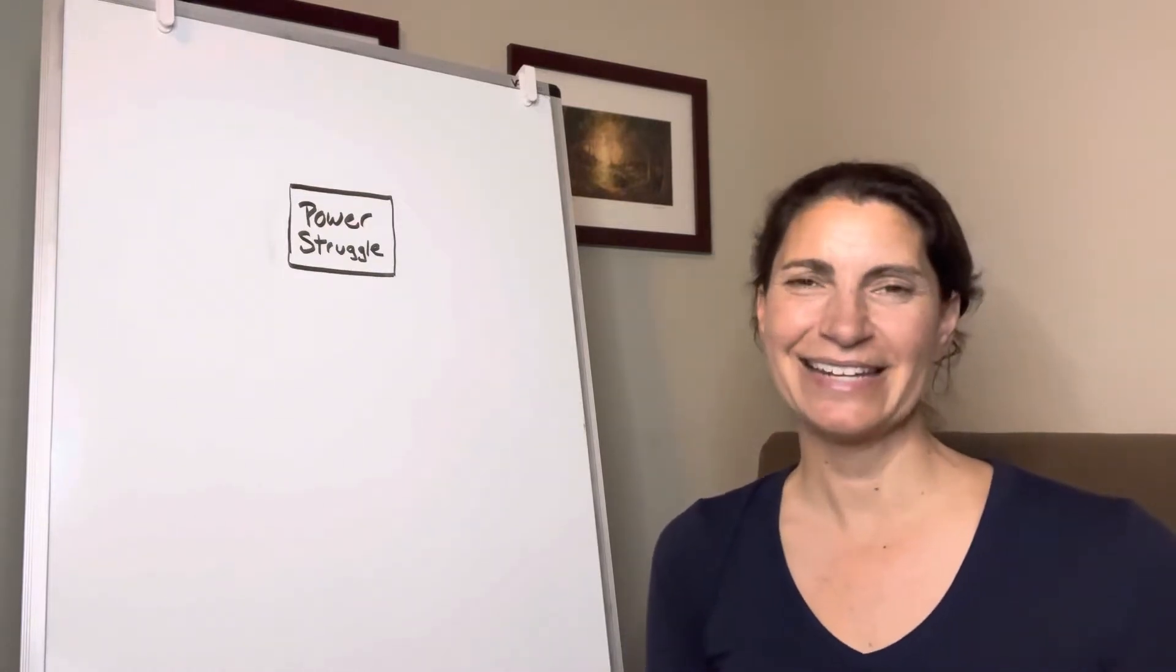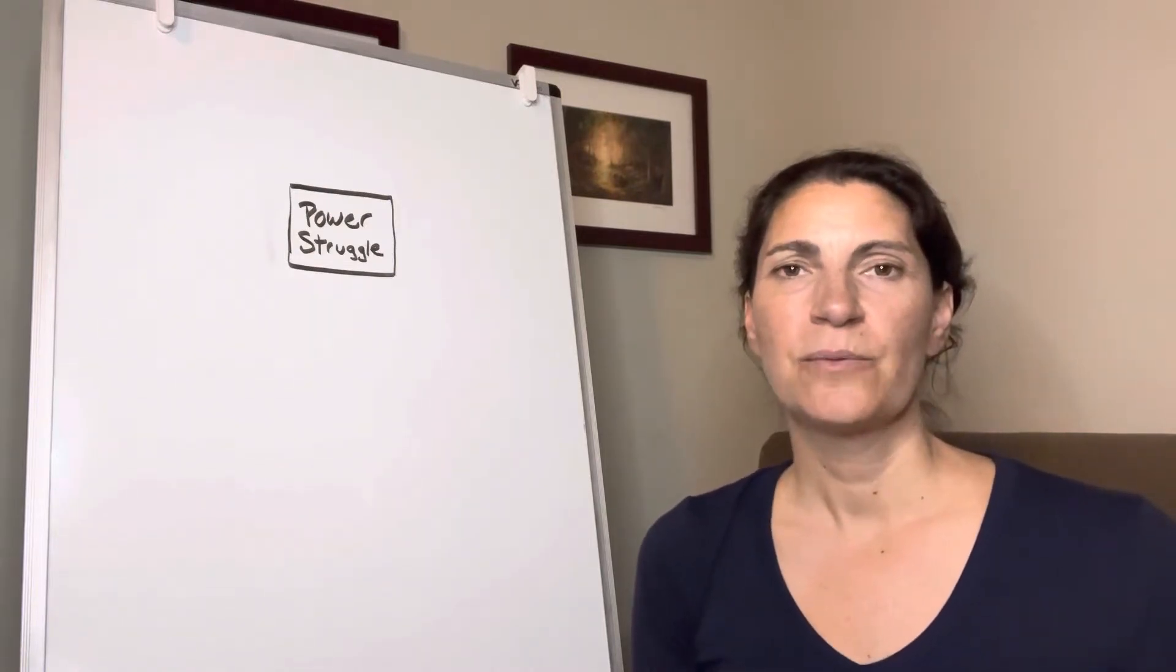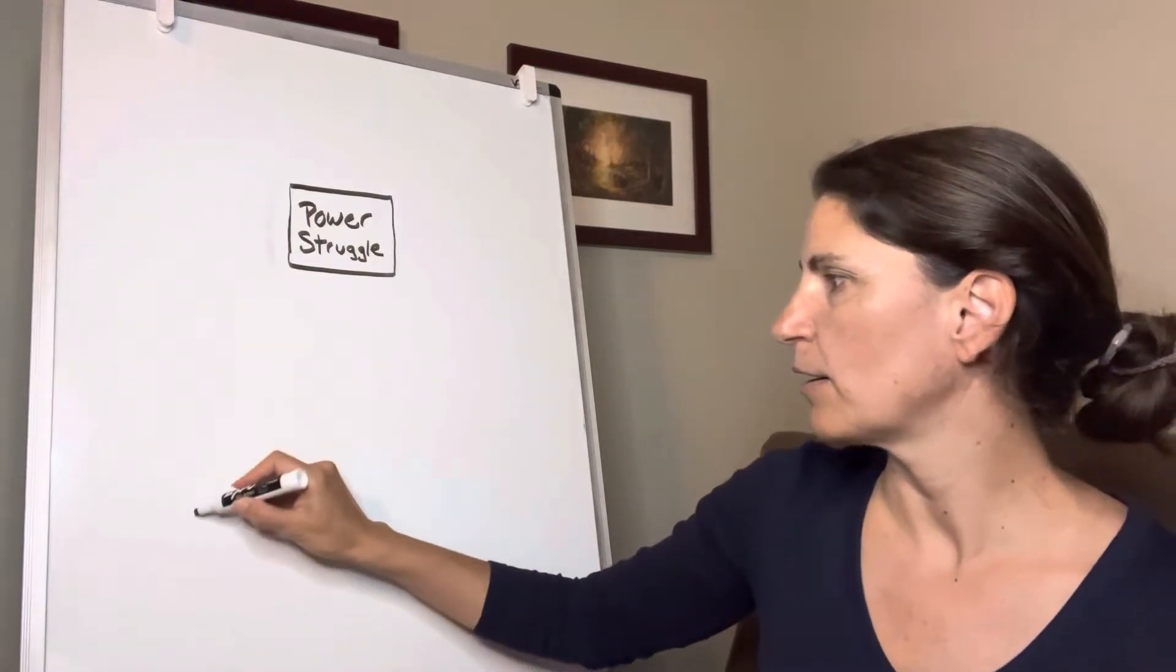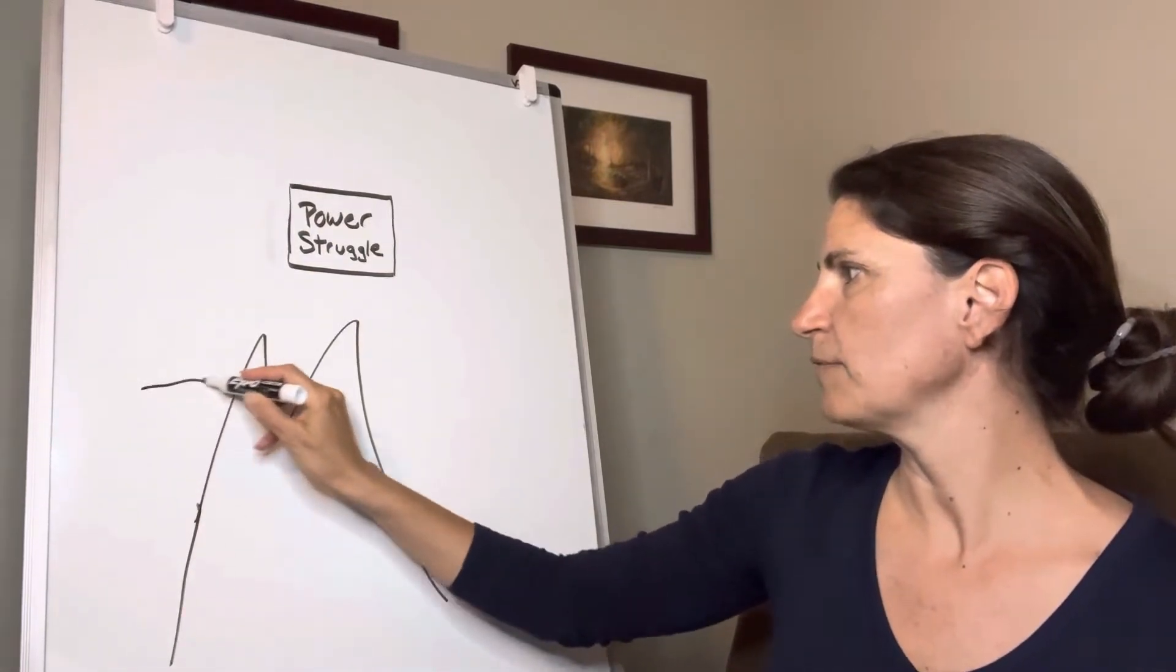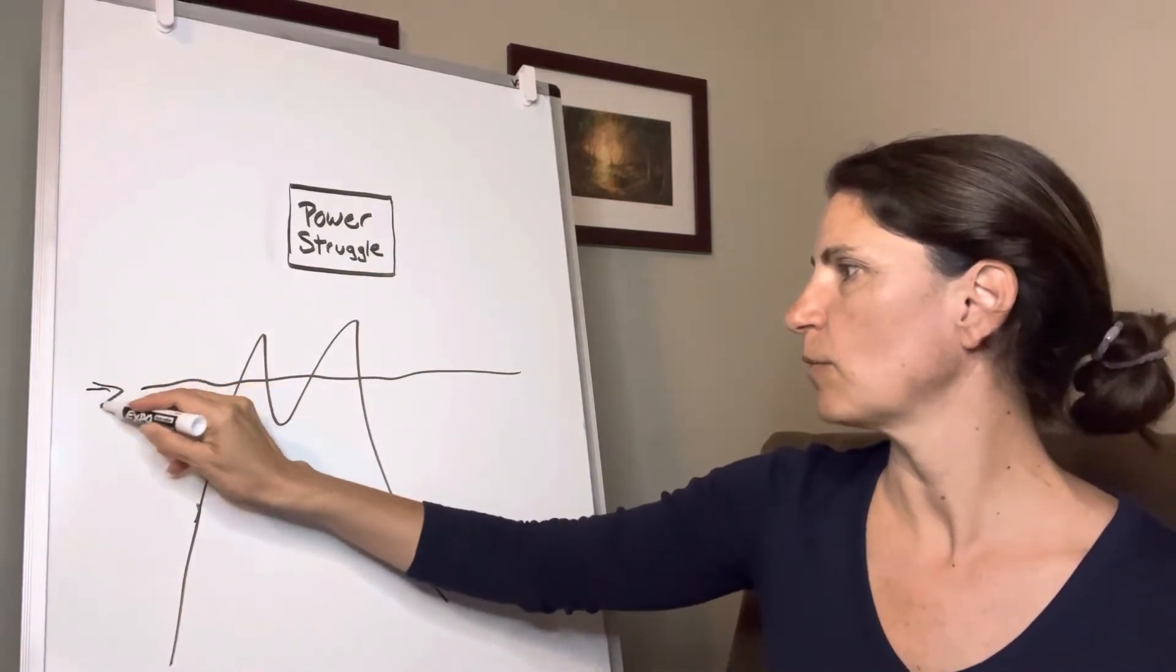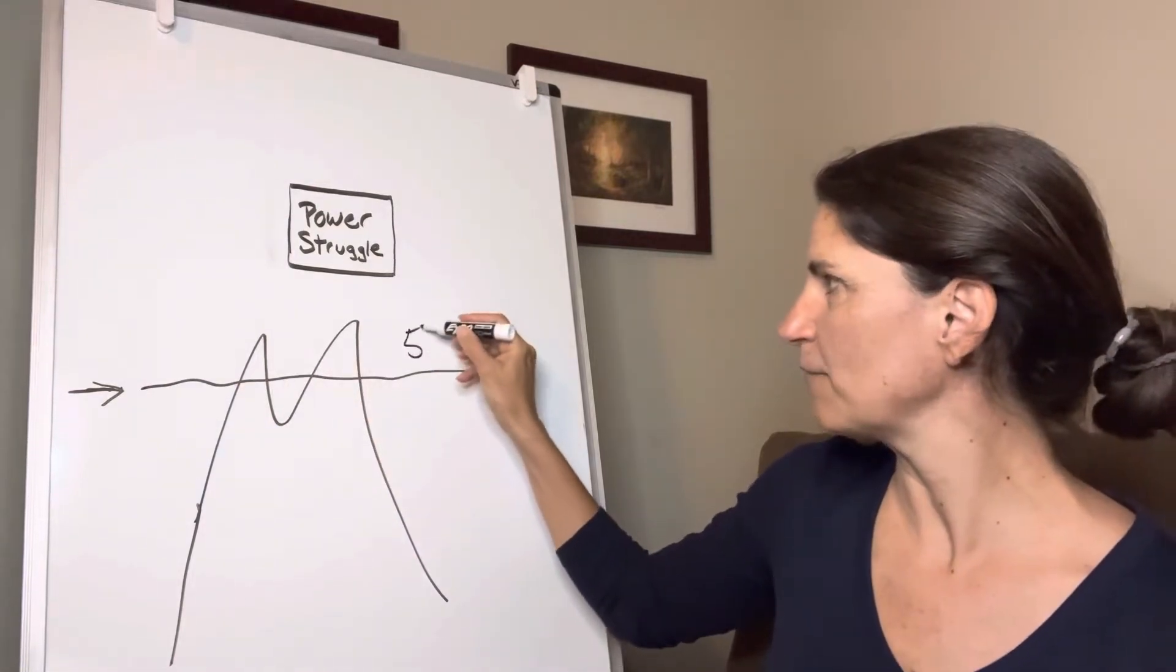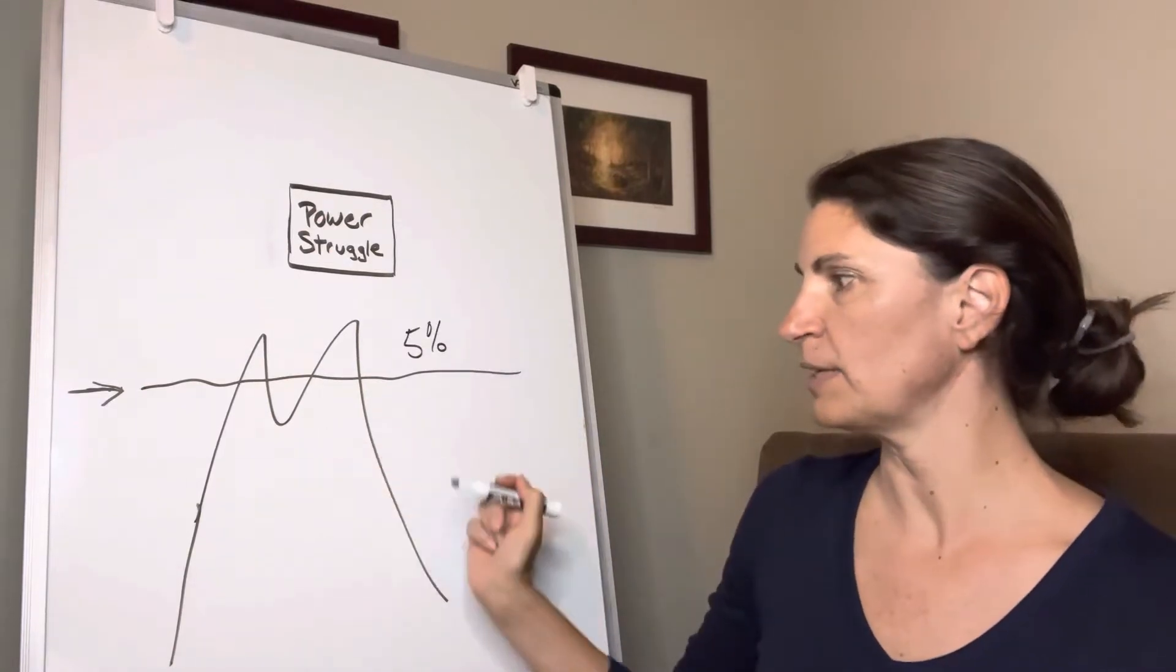In addition to that, there are some tools that can be very helpful. One of the things that we'll be talking about today is the importance of thinking about our children's behaviors like the very tip of the iceberg. So the very tip of the iceberg, this is the water line here. The very tip of the iceberg is the part of the iceberg that we can see above the surface, but it's really only about 5% of what's happening. There's so much going on beneath the surface.